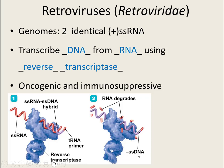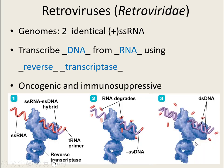That first DNA strand is the negative strand, single-stranded, so the enzyme goes back through and makes the complementary copy using that negative strand as a template — if there's an A it brings in a T, if there's a C it brings in a G — until ultimately you have double-stranded DNA that originated from single-stranded RNA.